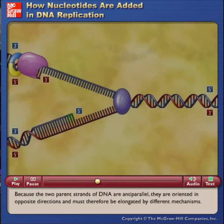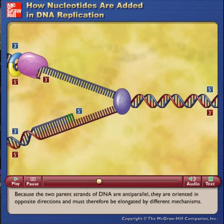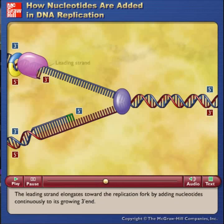Because the two parent strands of DNA are anti-parallel, they are oriented in opposite directions and must therefore be elongated by different mechanisms. The leading strand elongates toward the replication fork by adding nucleotides continuously to its growing 3' end.